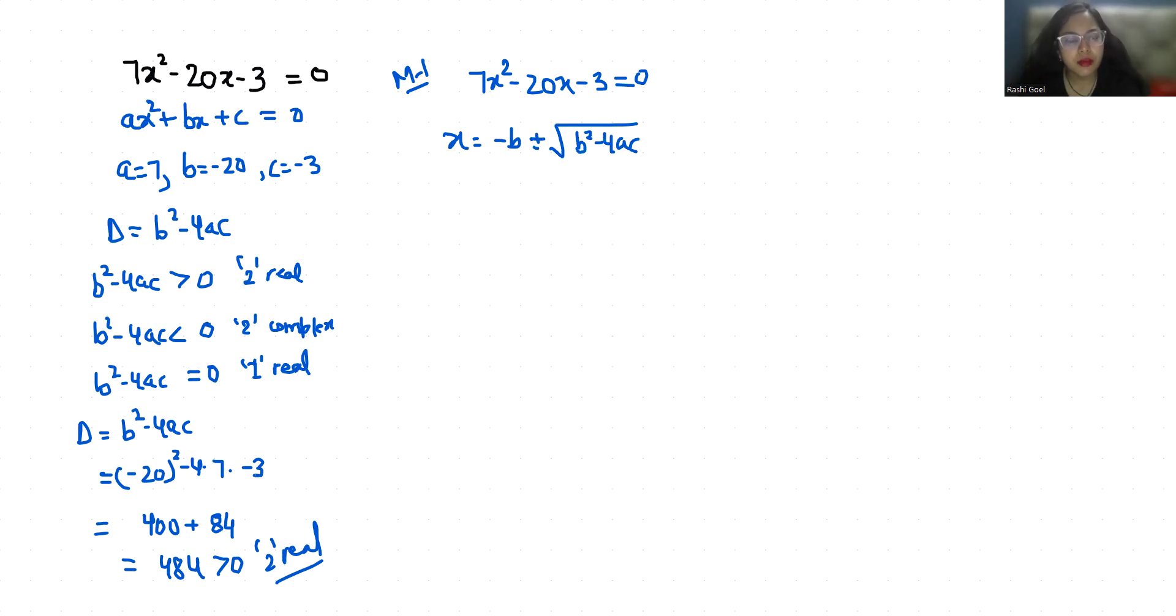So minus minus 20 plus minus under root minus 20 square minus 4 times 7 times minus 3, divided by 2 times 7. So it becomes 20 plus minus, and this we already solved, 484 by 14.